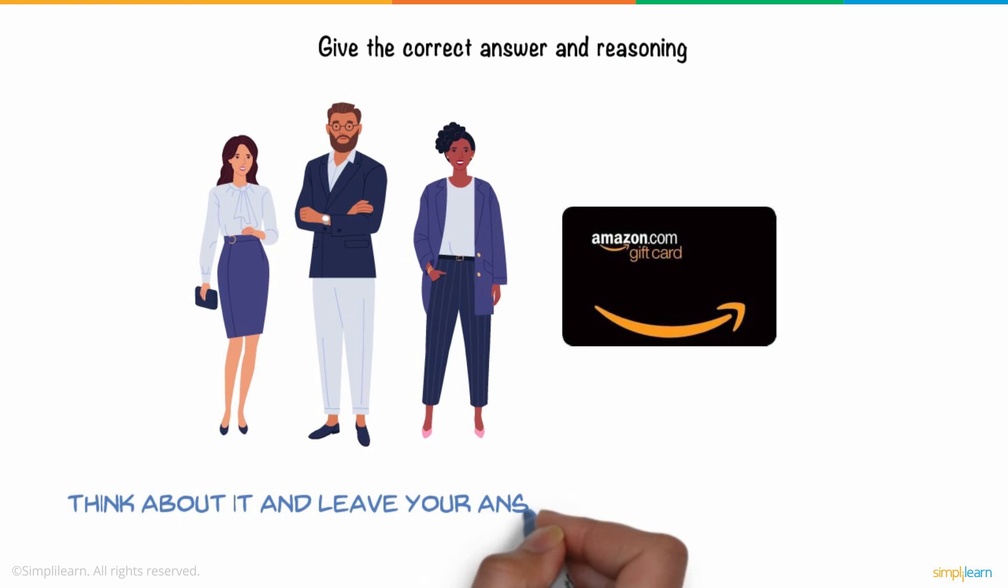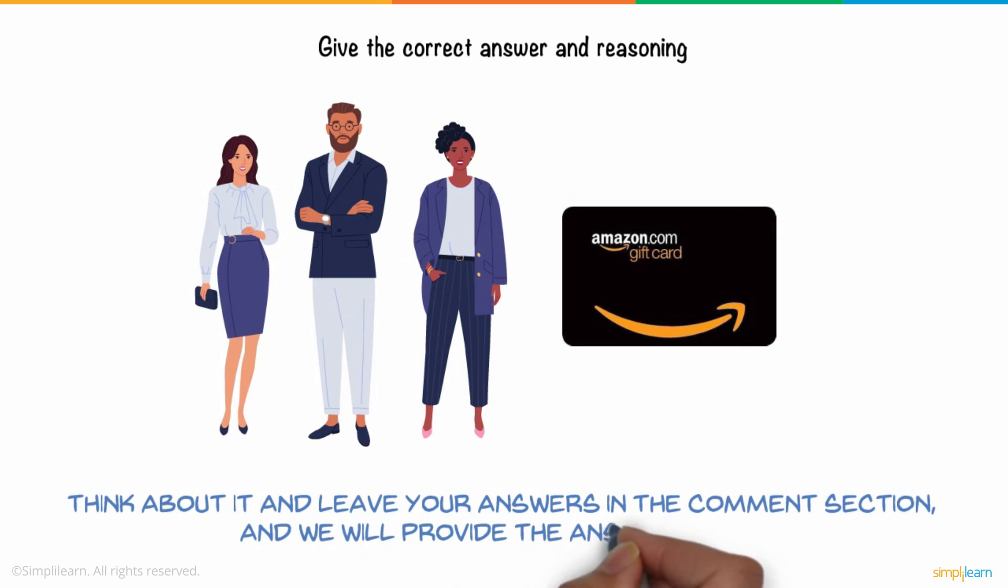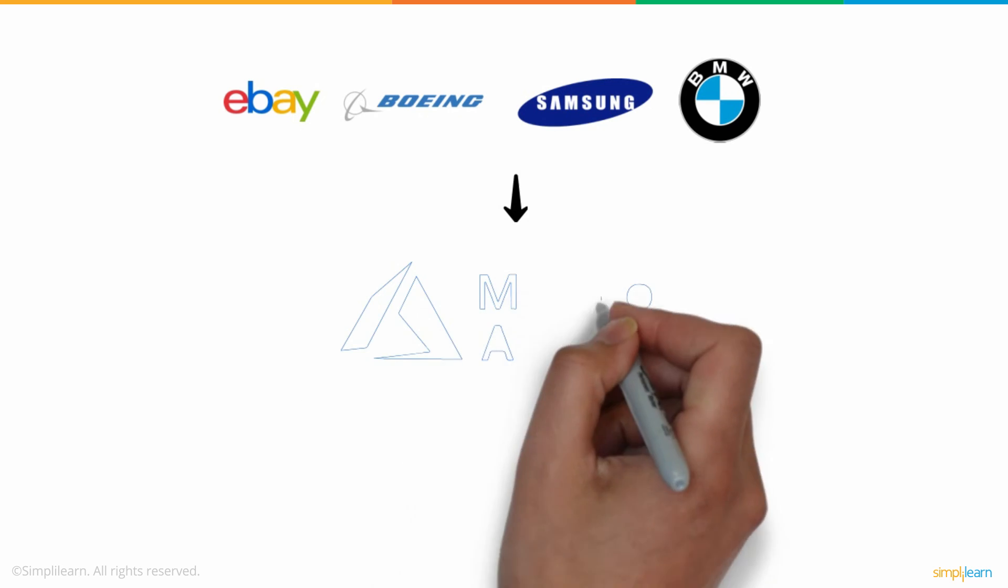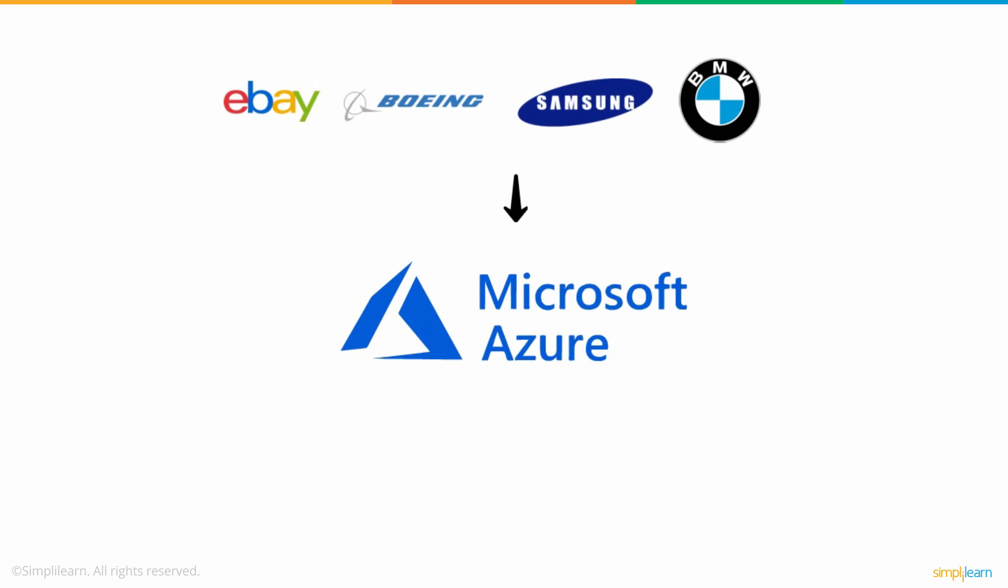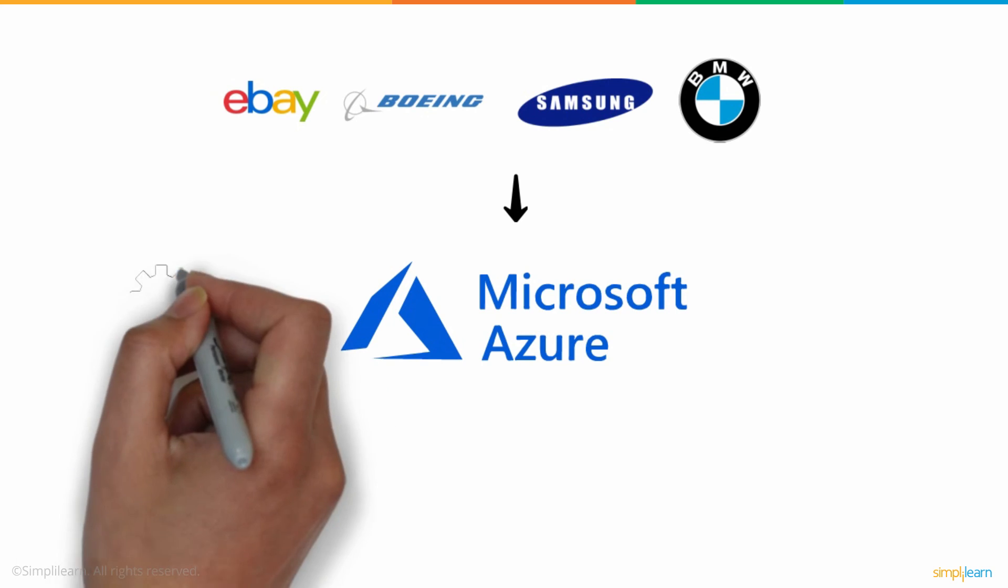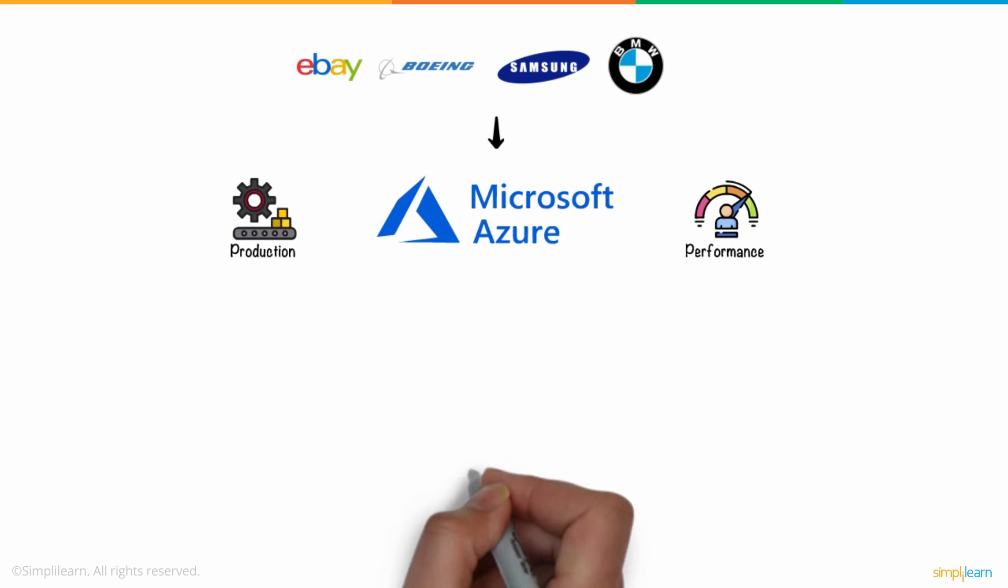Think about it and leave your answers in the comments section and we will provide the answer next week. Today, some of the biggest companies in the world, like eBay, Boeing, Samsung, and BMW, are now using the Microsoft Azure infrastructure and the support they require for their better production and performance.